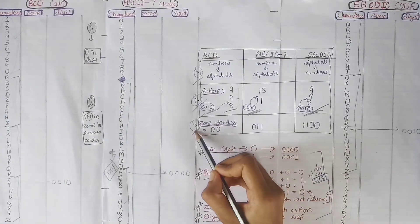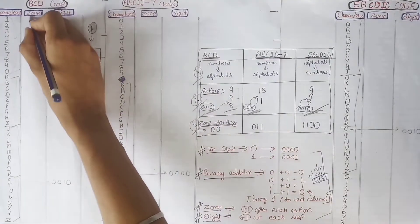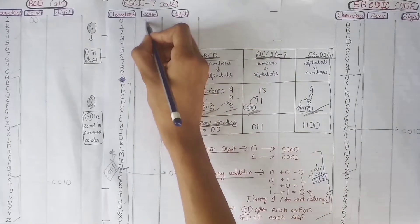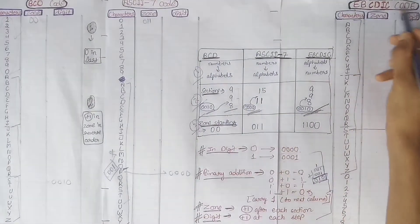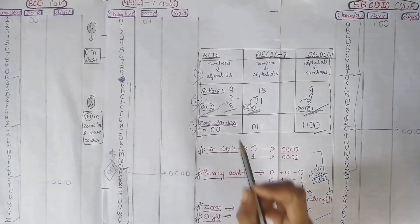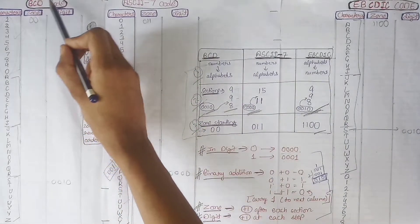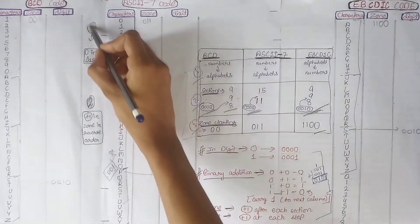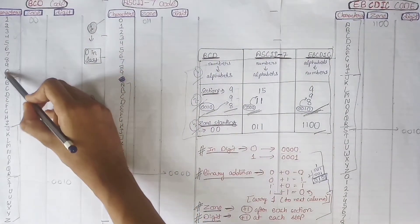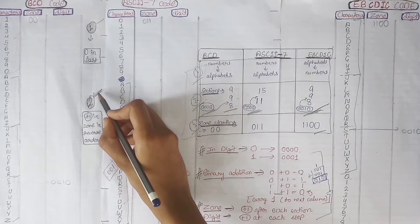The third and last trick is about zone starting values. In BCD code, the zone starts from 0000. In ASCII code, the zone starts from 011. In EBCDIC code, the zone starts from 1100. Now we have completed our three basic tricks. One more thing: in the BCD code number system, we write 0 in the last term, and we will see this second point during calculations.